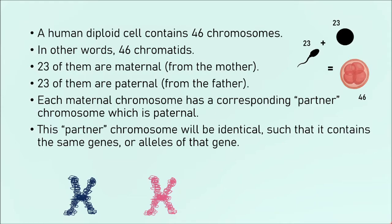A gene is a section of DNA found in a very specific, fixed place on the chromosome. On the maternal chromosome, the gene that codes for height will be in a very specific place; on the paternal chromosome, the gene that also codes for height will be in the exact same position. It doesn't matter if the mother's chromosome codes for tall and the father's for short — they both code for height; the alleles are different, but the gene is the same and in exactly the same position. These chromosomes will also be the same size and length, coding for the same amount of genes. We therefore refer to these chromosomes as homologous.